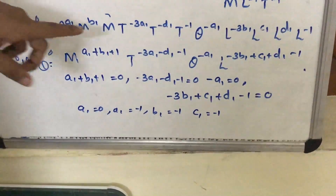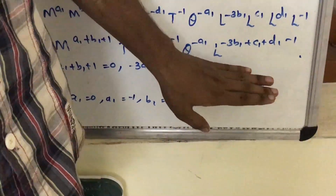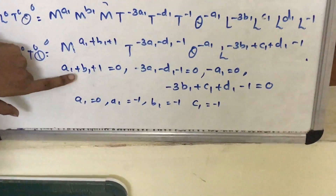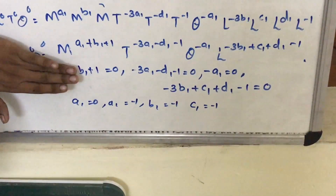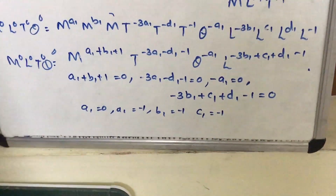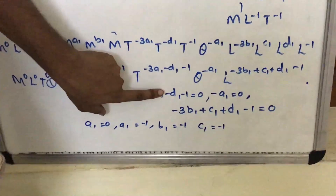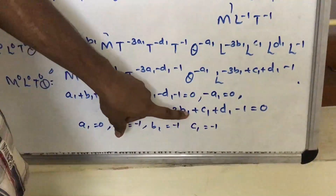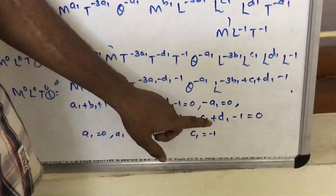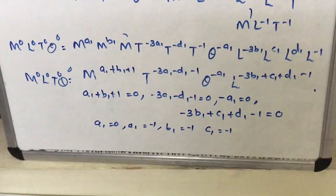From the theta equation, minus A1 equals 0, so A1 equals 0 directly. Substituting A1 equals 0 into the M equation gives B1 plus 1 equals 0, so B1 equals minus 1. Substituting A1 equals 0 into the T equation gives minus D1 minus 1 equals 0, so D1 equals minus 1. Finally, substituting B1 equals minus 1 and D1 equals minus 1 into the L equation, we solve and get C1 equals minus 1.